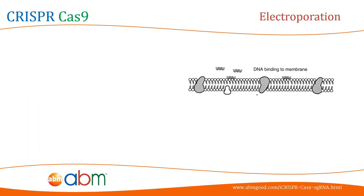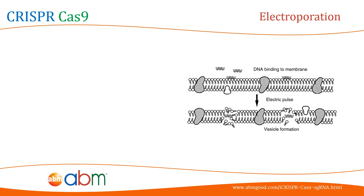Electroporation — as the name suggests, this method uses an electrical pulse to physically create temporary pores in cell membranes to allow foreign DNA to enter the cells. This method allows various types of DNA to be introduced readily into cells without limitations of DNA size. On the other hand, the main concern with this method is the substantial cell death caused by the high voltage pulses, and it requires more cell numbers compared to chemical transfection methods.